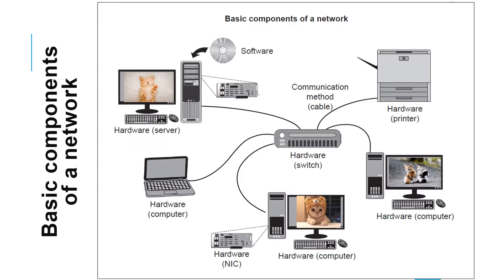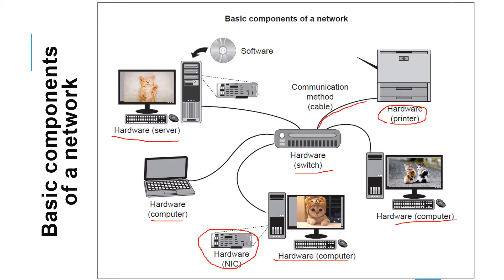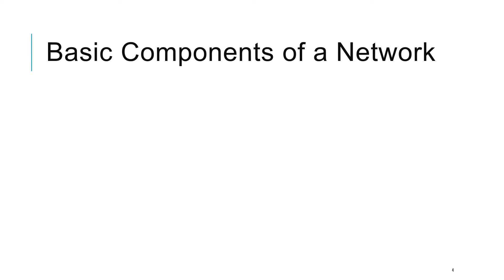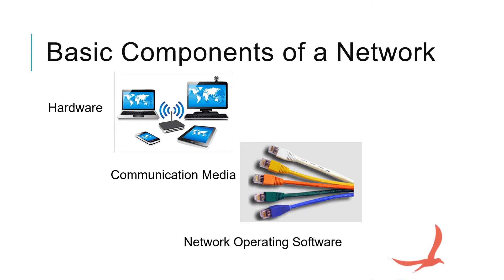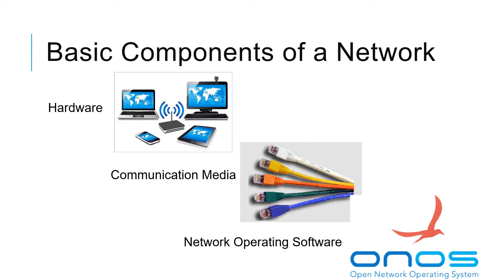The basic components of a network include a server, computers that connect to the network, network interface cards on each computer, useful devices like a printer, and a switch which allows all the computers to be connected. Very important are the cables which connect the computers to the switch. We'll talk about hardware, communication media, and network operating system software in more detail in the slides that follow.